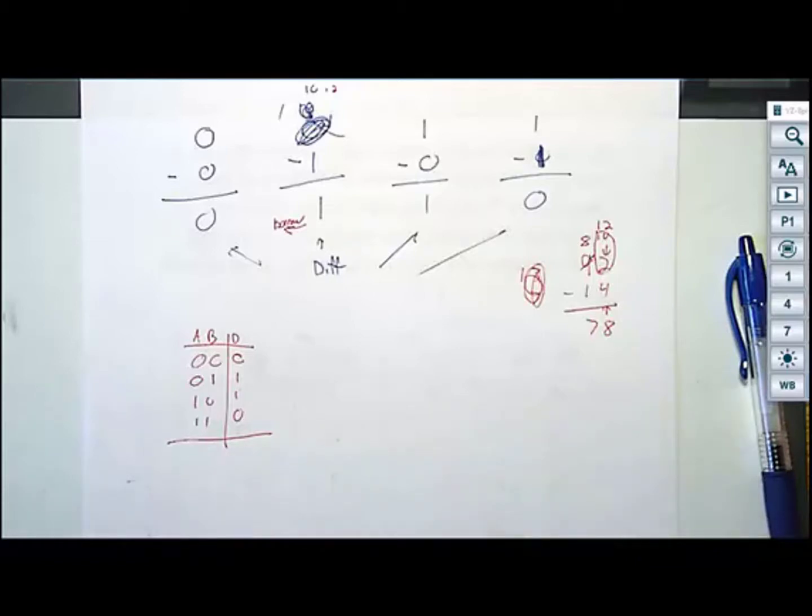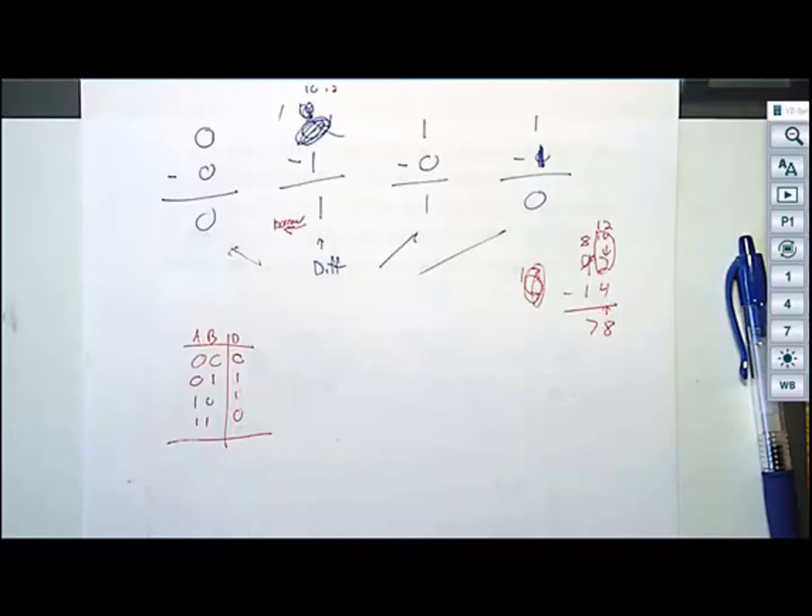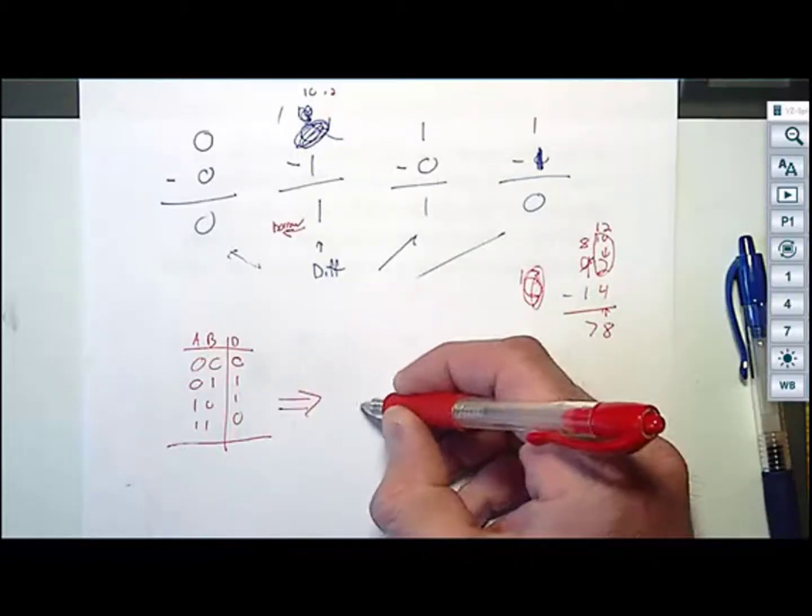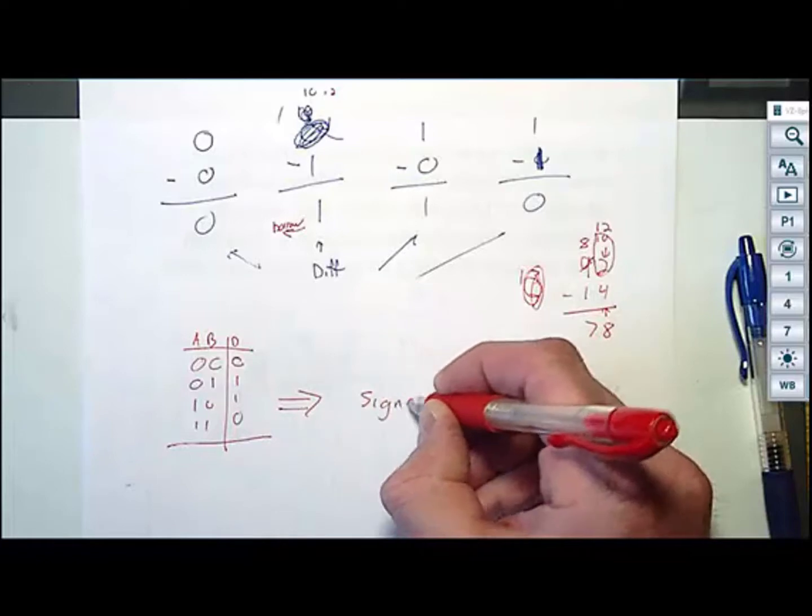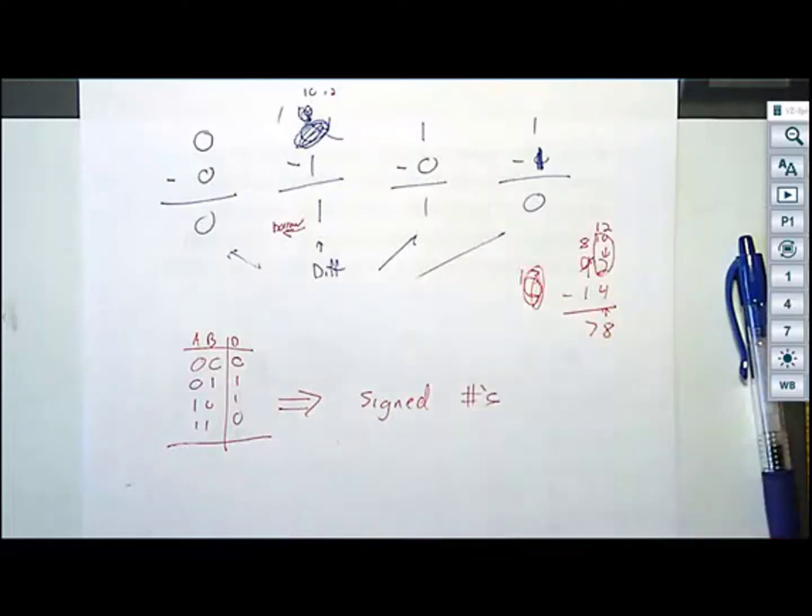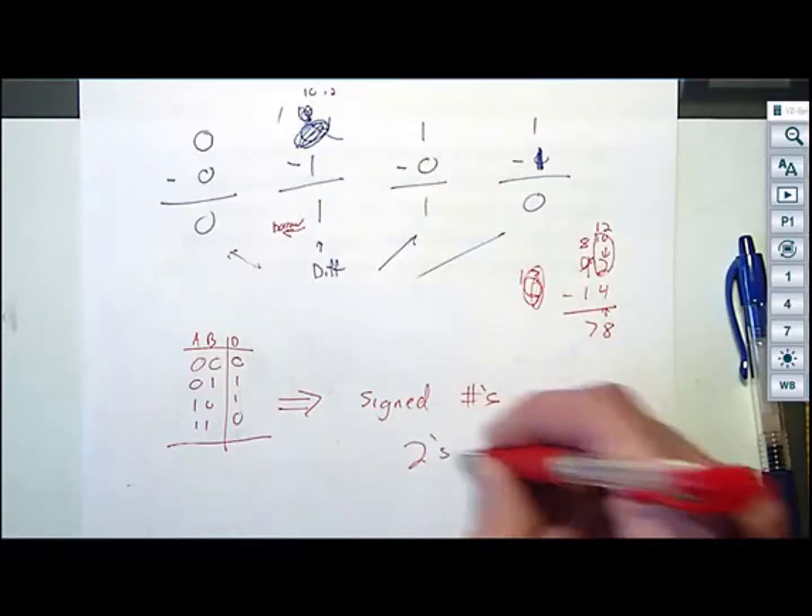As soon as you start doing subtraction, you immediately run into negative numbers. There's no way around it. When you add two positive numbers, you always get a positive result. If you subtract positive numbers, half the time you're going to get a negative number. So you immediately have to say, I give up. I'm going to use negative numbers. So subtraction immediately starts using signed numbers. The signed code that we use is two's complement.